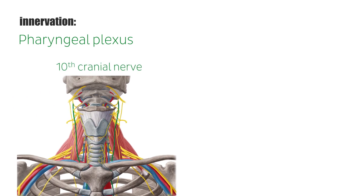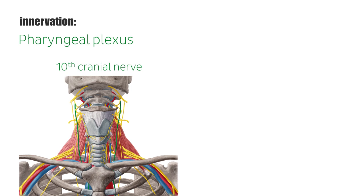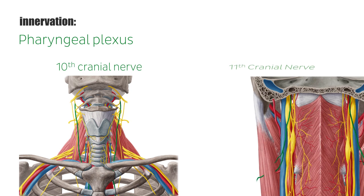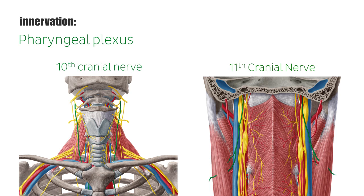It is innervated by the pharyngeal plexus, which takes its motor fibers from the vagus nerve, the 10th cranial nerve, and the cranial portion of the accessory nerve, the 11th cranial nerve. This plexus innervates all soft palate muscles except the tensor veli palatinae muscle.